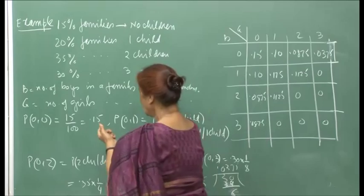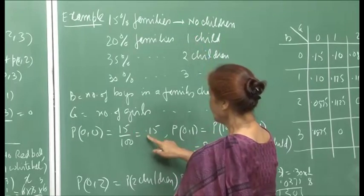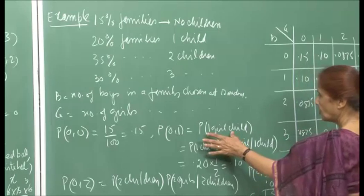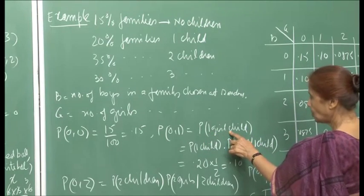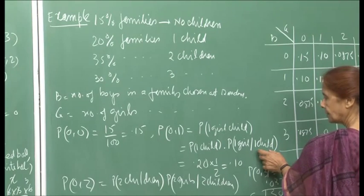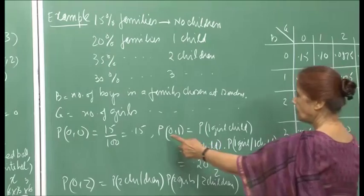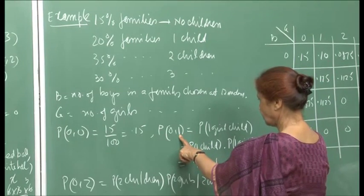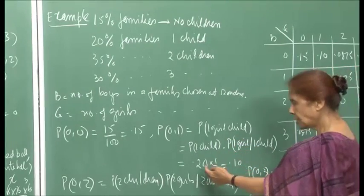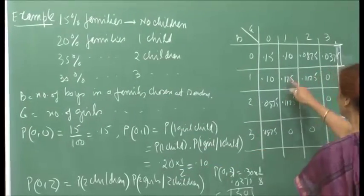To compute P(0,0) — no boys, no girls — this means no children, so P(0,0) = 0.15. For P(0,1) — no boy, 1 girl — this is probability of 1 child times probability that child is a girl: 0.20 × 1/2 = 0.10. For P(0,2) — no boy, 2 girls — this is 0.35 × (1/2)² = 0.35 × 1/4 = 0.0875.